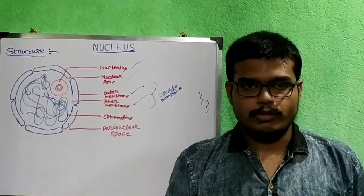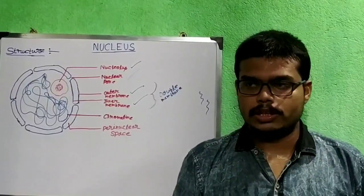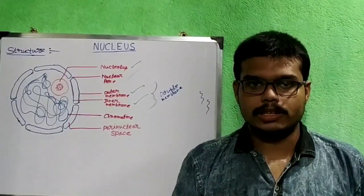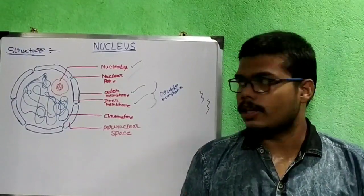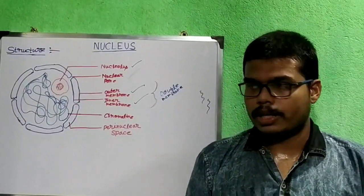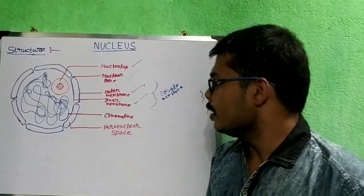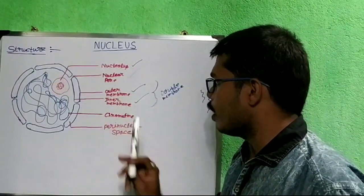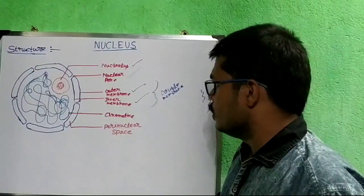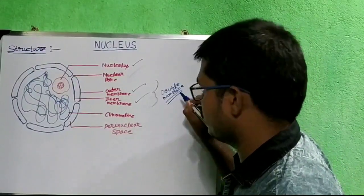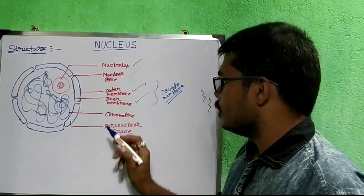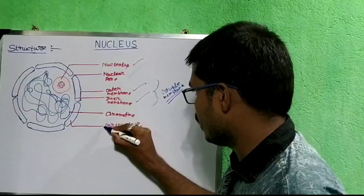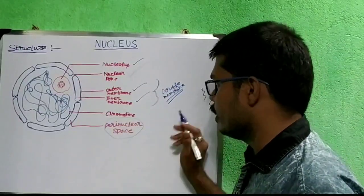At first, I will discuss about the nucleus. This nucleus was first discovered by Robert Brown in 1831. Here is the basic structure of nucleus where you can see that the nucleus is covered by two membranes — one is outer membrane and another one is inner membrane. It is a double membranous structure and the place present between two membranes is known as perinuclear space.